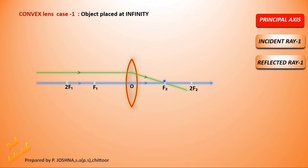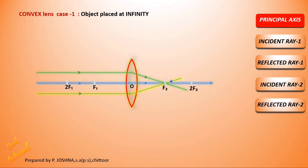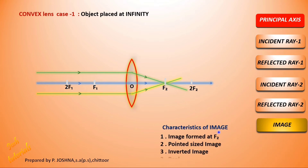Draw a second ray also parallel to the principal axis — and the refracted ray also passes through the focus. Both refracted rays meet at the focal point, so the image is formed at F2. The image is point-sized, inverted, and real — it can be caught on a screen.